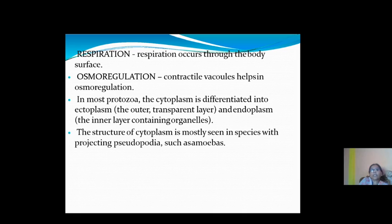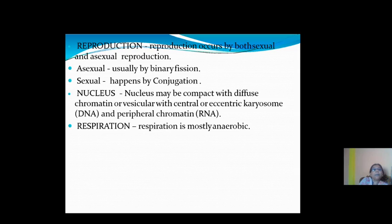In most Protozoa, the cytoplasm is differentiated into ectoplasm (outer layer) and endoplasm (inner layer), a structure mostly seen in species with projecting pseudopodia such as Amoeba. Reproduction occurs by both asexual and sexual means — asexual reproduction usually by binary fission, and sexual reproduction usually by conjugation. The nucleus may be compact with diffuse chromatin or vesicular. Respiration is mostly anaerobic, meaning in the absence of oxygen.